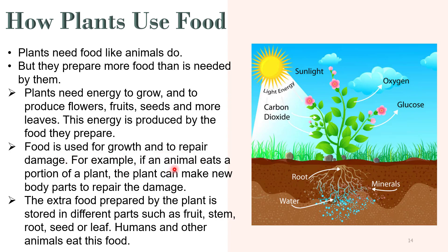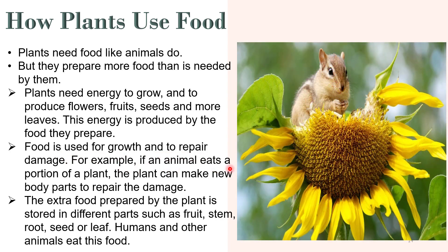The food prepared by plants is used for growth and to repair damage. For example, if an animal eats a portion of a plant, the plant can make new body parts to repair the damage. The extra food prepared by the plant is stored in different parts such as fruit, stem, root, seed or leaves. Humans and other animals eat this food.